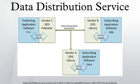The Data Distribution Service for real-time systems is an Object Management Group machine-to-machine middleware (M2M) standard that aims to enable scalable, real-time, dependable, high-performance, and interoperable data exchanges between publishers and subscribers.